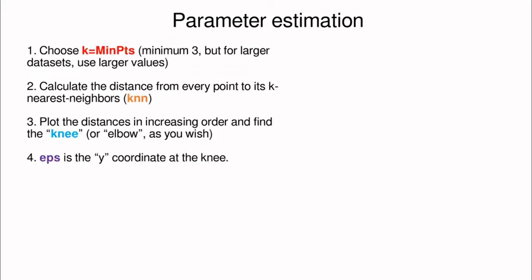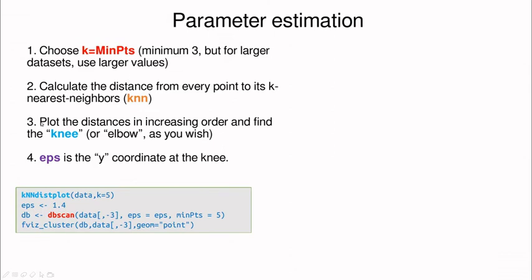How can we estimate parameters? Because we have two hyperparameters epsilon and the minimum number of points in that area but this is not going to be an easy task. So let me show you a kind of algorithm to try to identify them. So let's try to choose k as MinPts starting from three but sometimes for larger data sets we can use five, six or even ten and then we calculate the distance from every point to its k nearest neighbor. So it's a kind of KNN algorithm there. And now we're going to plot the distances of increasing order until we find the knee or the elbow as you wish and then try to estimate epsilon as the y coordinate of that knee.